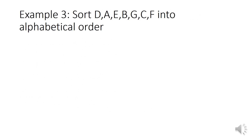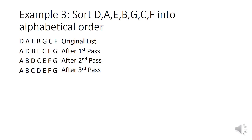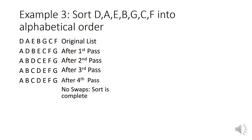In the last example we're going to be sorting D, A, E, B, G, C and F into alphabetical order. This is exactly the same as sorting into ascending order with numbers, but just with letters instead. We'll write out the original list and keep doing passes until it's in alphabetical order. You can see A, B, C, D, E, F, G is in alphabetical order. So we do one more pass to show that no swaps have been done and the sort is complete.